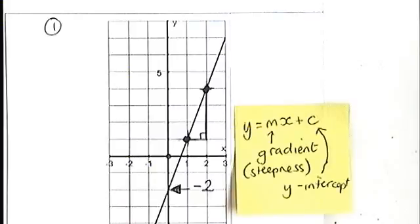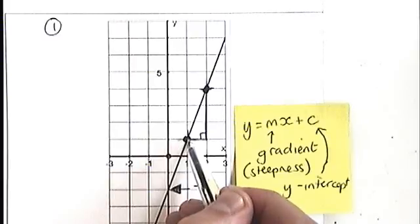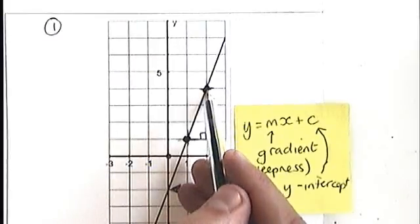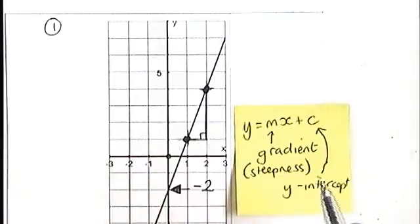Remember what the gradient means. The gradient means for every unit along, how far up does this line go? So if I want to stay on the line and move from this point here to this point here, I need to move along one square and up three squares.